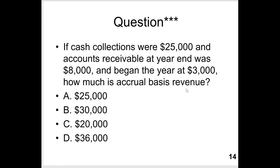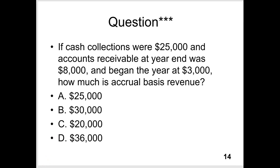So $25,000 was collected — was $25,000 also earned? Probably not, because if accounts receivable at year-end was $8,000, that $8,000 was earned in the current year but collected next year. So that means the $8,000 is not already in the $25,000 collected this year, but it was earned this year. We're going to add the $8,000 — not because of a formula, but because it was earned this year and will be collected next year. So we're up to $33,000 earned this year.